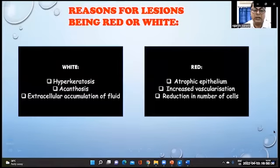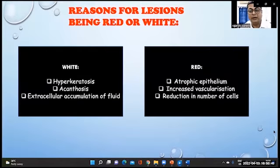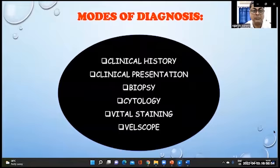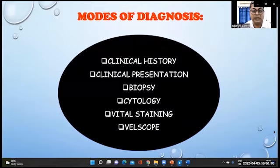Lesions appear white due to hyperkeratosis, acanthosis, and extracellular accumulation of fluid, and appear red due to atrophic epithelium, increased vascularization, and reduction in the number of cells. The modes of diagnosis include obtaining a good clinical history, clinical presentation, biopsy, cytology, and vital staining.